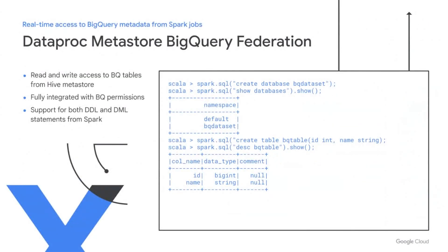Last but not least, you can now access BigQuery metadata from the Dataproc-managed Hive Metastore in real time. You can even do DDL and DML on BigQuery data directly from your Spark applications.